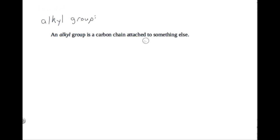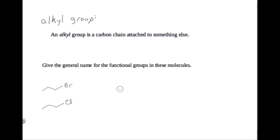Later in the course, you might need a more precise definition of an alkyl group, but for now it'll be convenient to say that an alkyl group is a carbon chain attached to something else. This is a term that's often used in textbooks and lectures, so you should know that when a professor refers to an alkyl group, we can think of that as a carbon chain attached to something else. For example, this molecule can be called an alkyl halide.